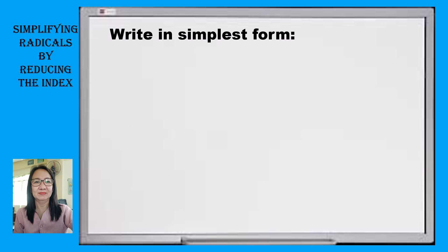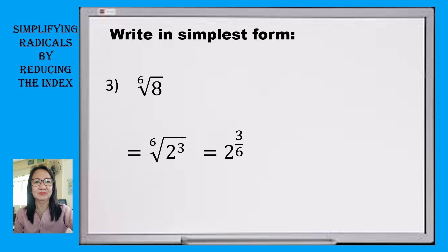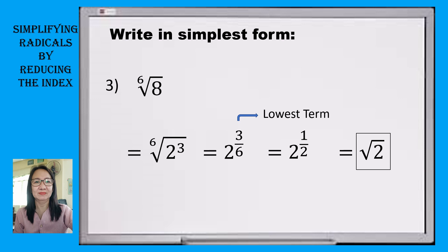Now let us look at example number 3. Our given is the 6th root of 8. Let's write 8 into exponential form, which is 2 cubed. So the 6th root of 2 cubed. Then let us write this radical into exponential form, which is 2 raised to 3 over 6. We can reduce 3 over 6 to the lowest term, which is 1 half. So we have 2 raised to 1 half. Then transforming this into radical form, our index is 2. Therefore, that is the square root of 2, and this is the simplest form.